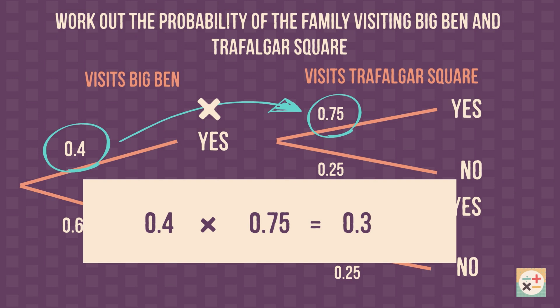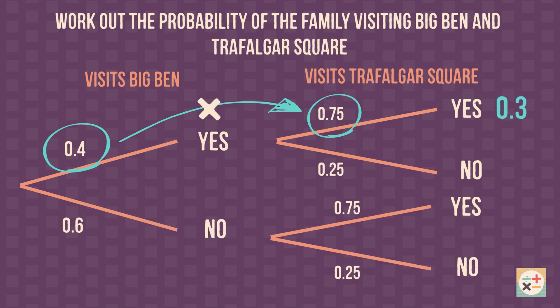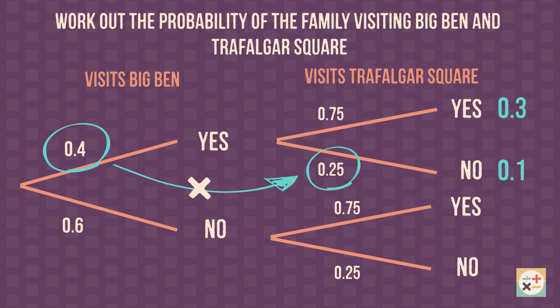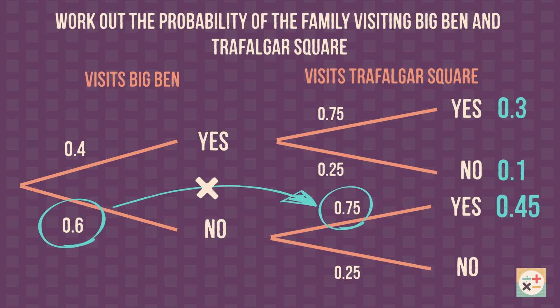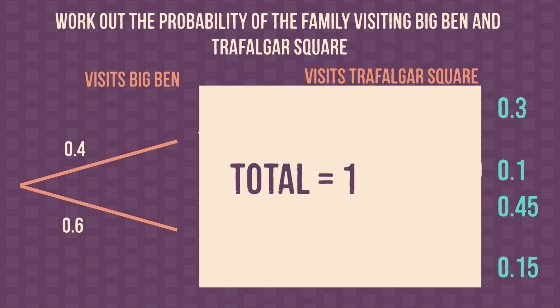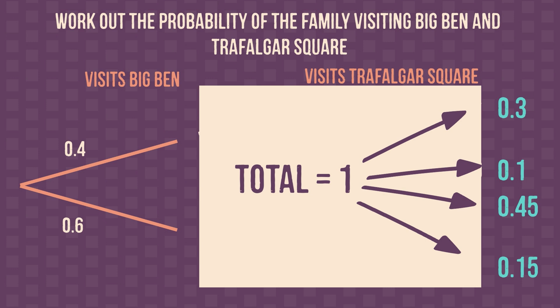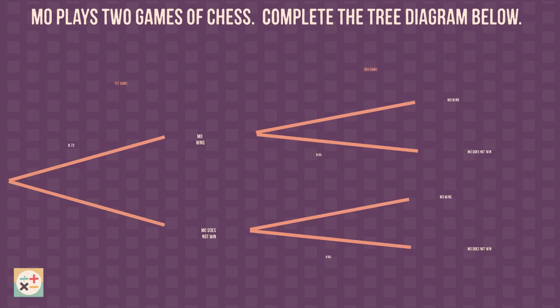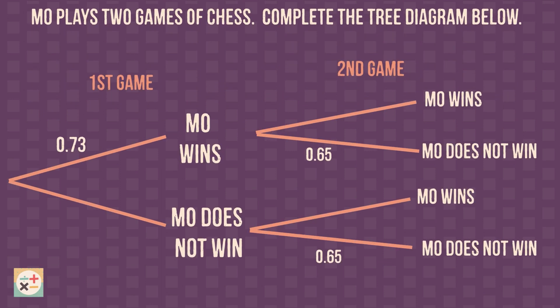We can also check that the tree diagram is correct by calculating all of the probabilities in the same way as we have just done, and then adding them all up. They should always add up to one. For some questions, you may be given an incomplete tree diagram and be asked to complete it. We can use the facts we have just learnt to help us.